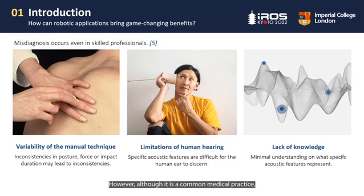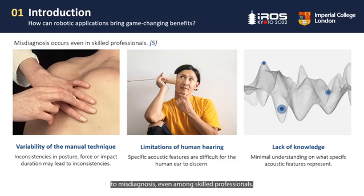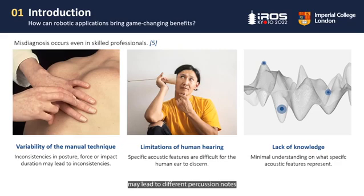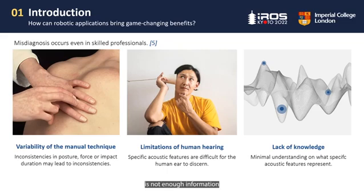However, although it is a common medical practice, there is a limited understanding of its dynamics. This, alongside human limitations, can lead to misdiagnosis even among skilled professionals. There are some key factors contributing to this. First, it is impossible for humans not to introduce variability to this manual technique. Inconsistencies in posture, force, or impact duration may lead to different percussion notes and therefore might affect diagnosis. Second, the human hearing rate is limited and some key acoustic features might be missed. And third, there is not enough information on what acoustic features characterize specific tissue structures or pathologies.